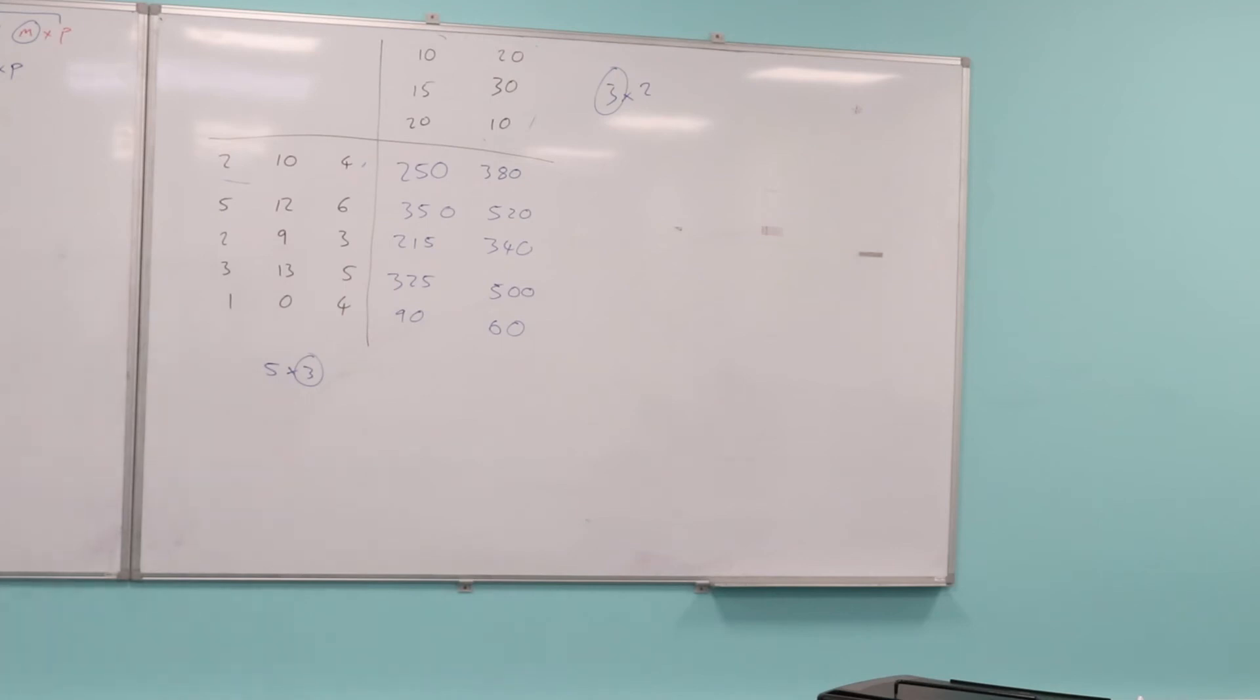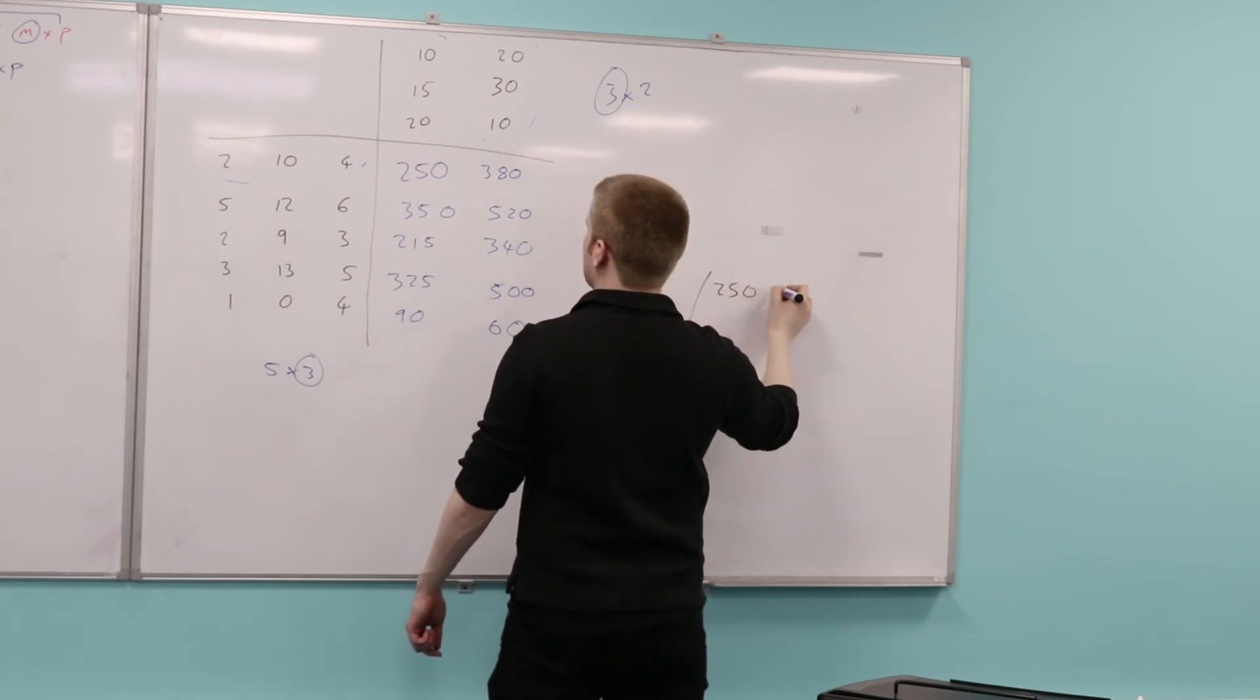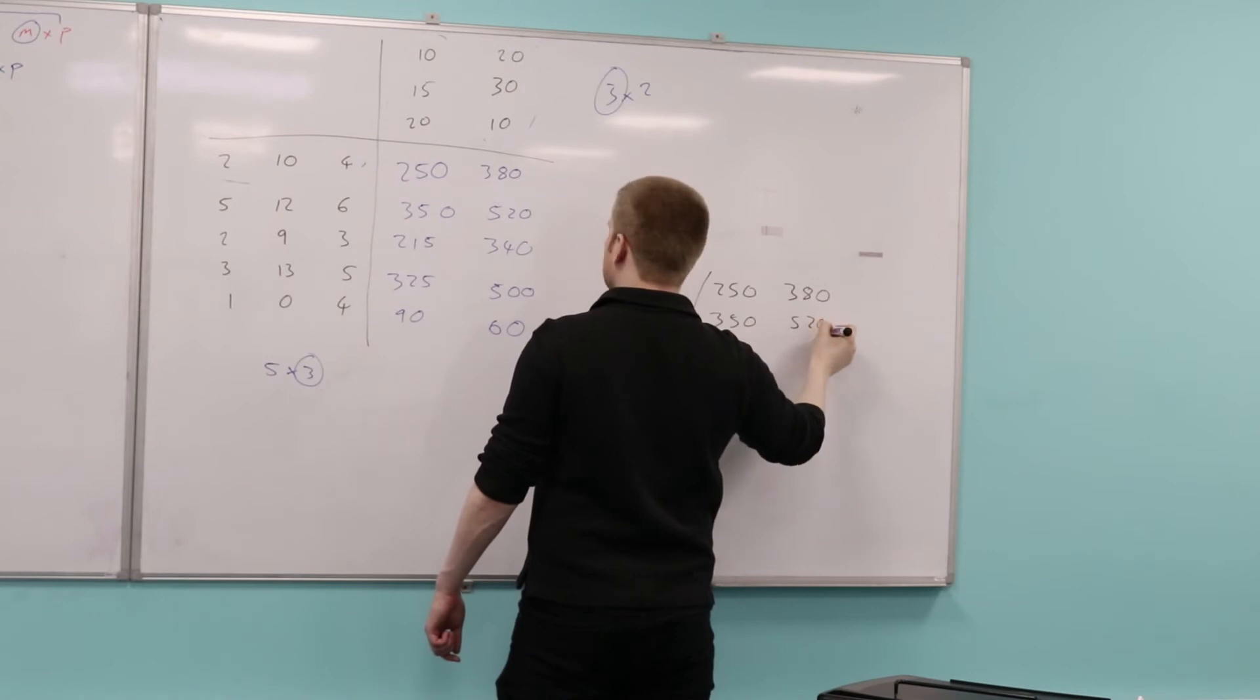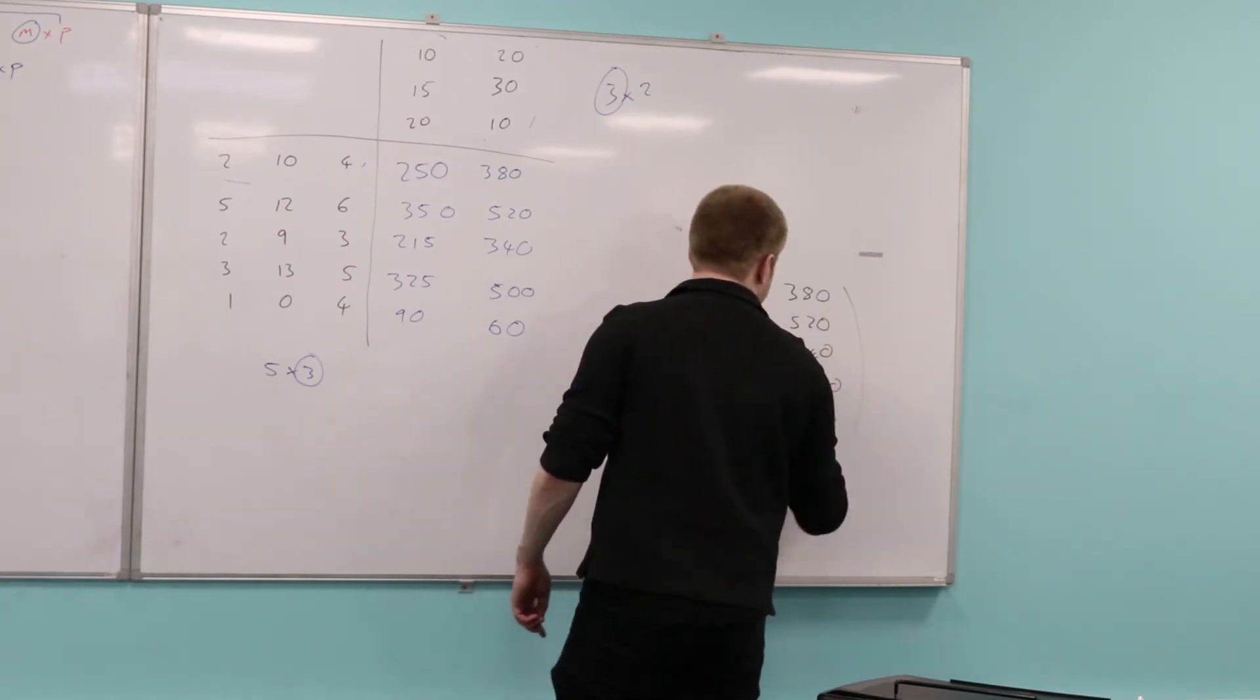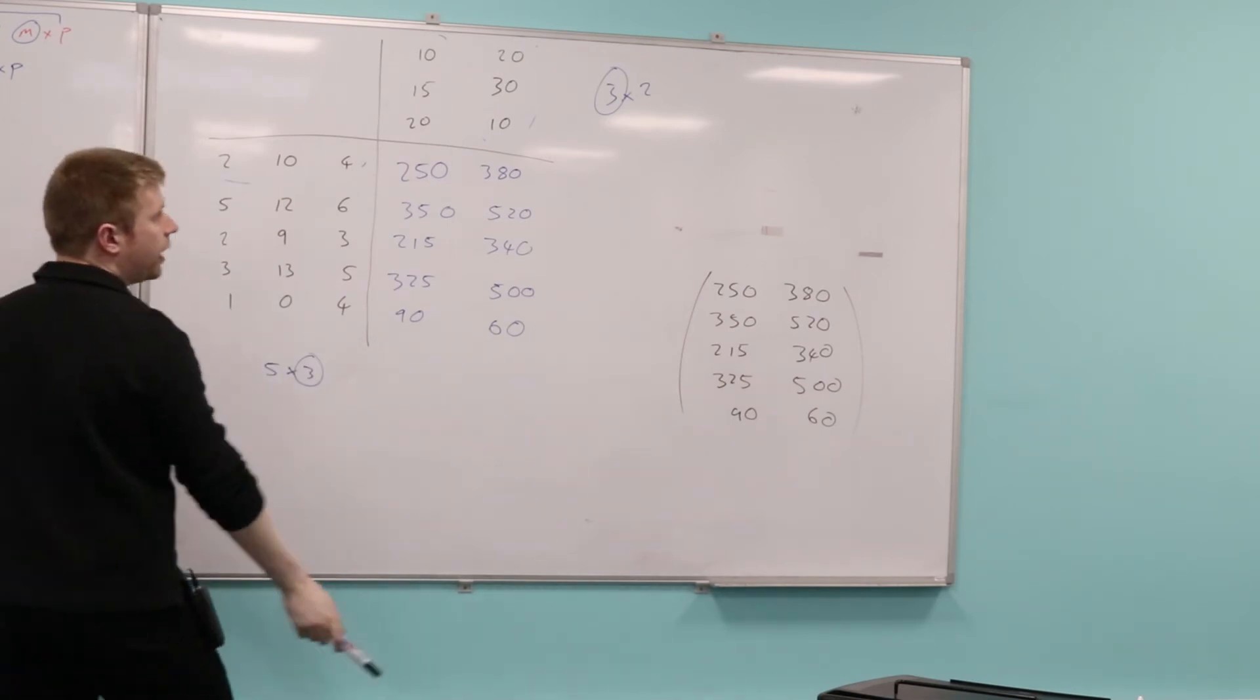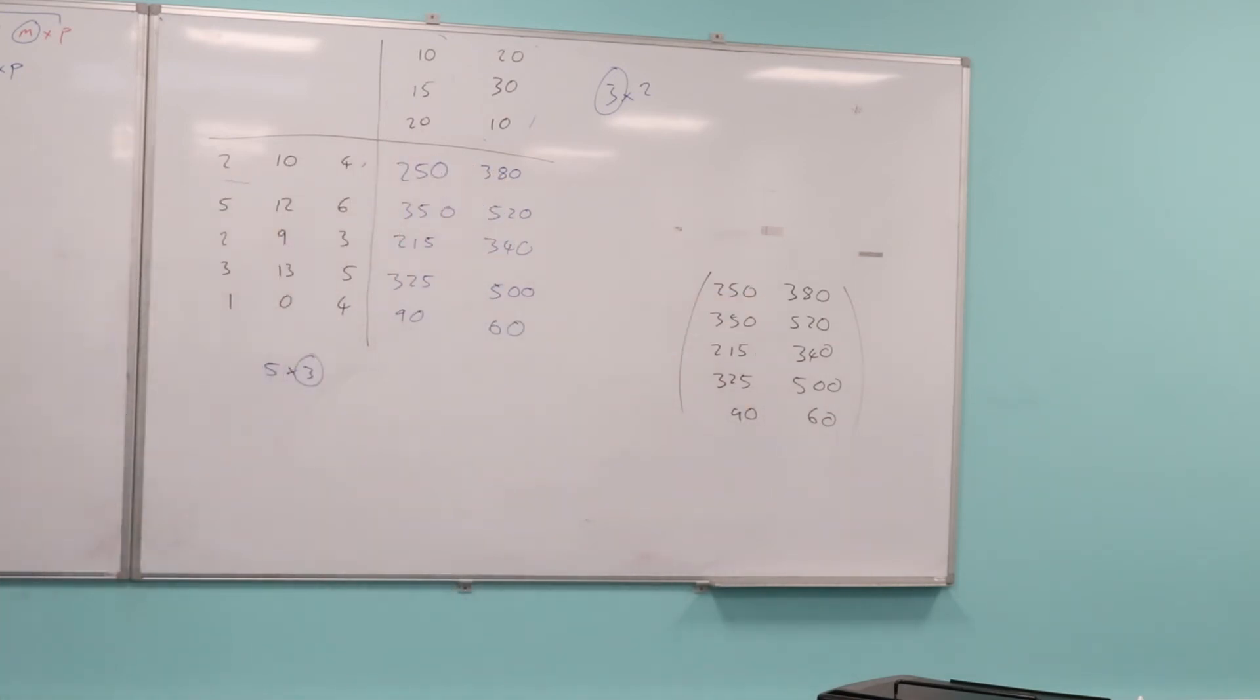So if you like, I could write this out again. The resulting matrix would be 250, 380, 350, 520, 215, 340, 325, 500, 90, and 60. And as predicted, the resulting matrix should be a 5 by 2. Is that OK?